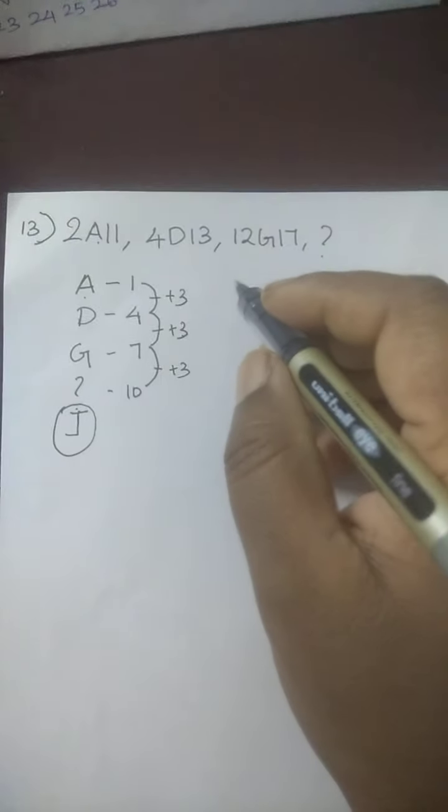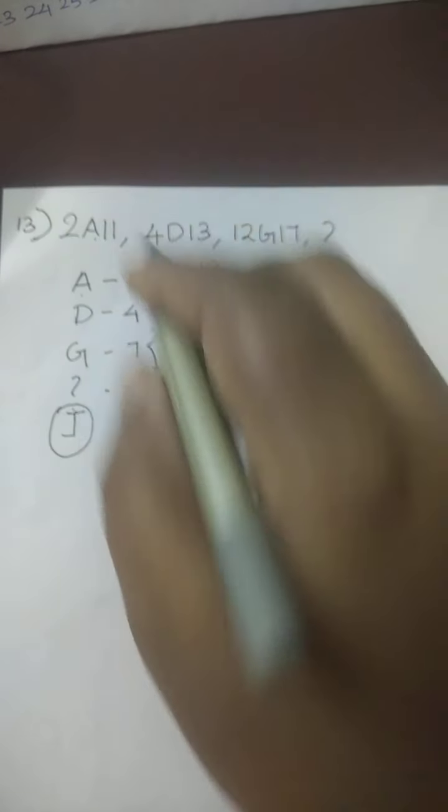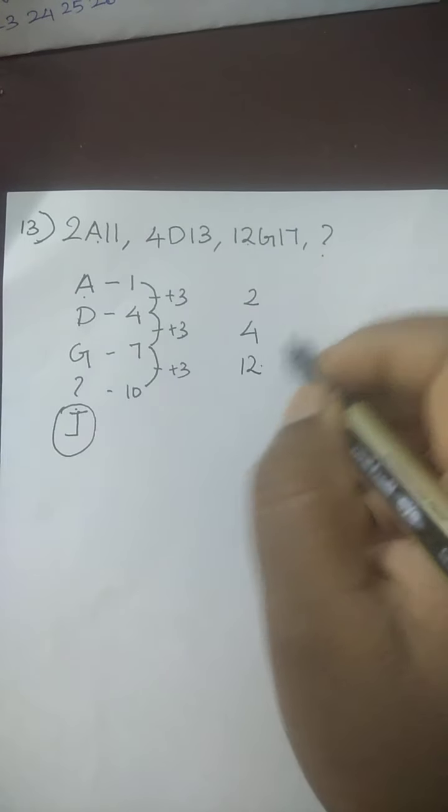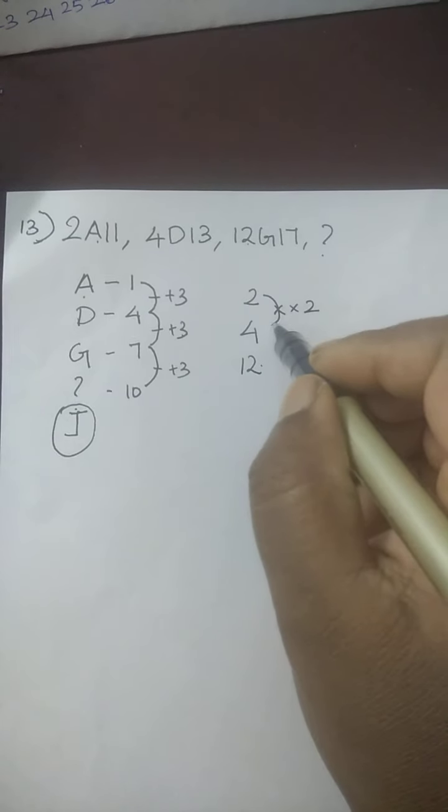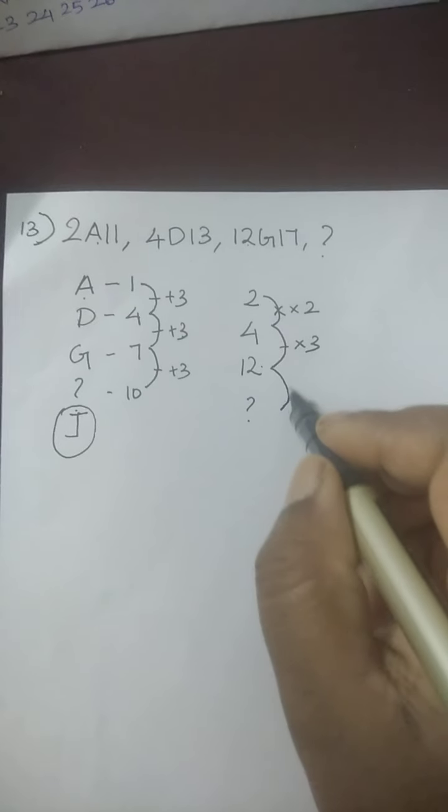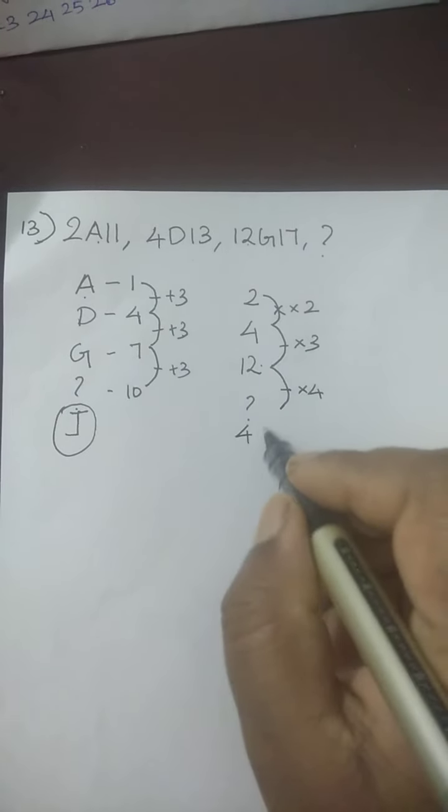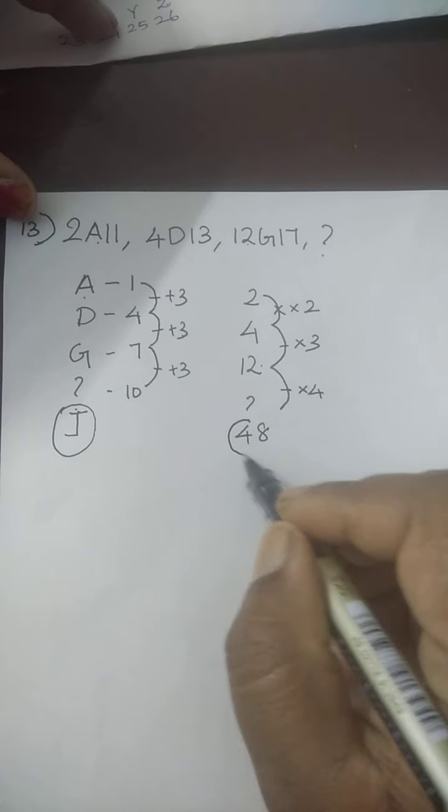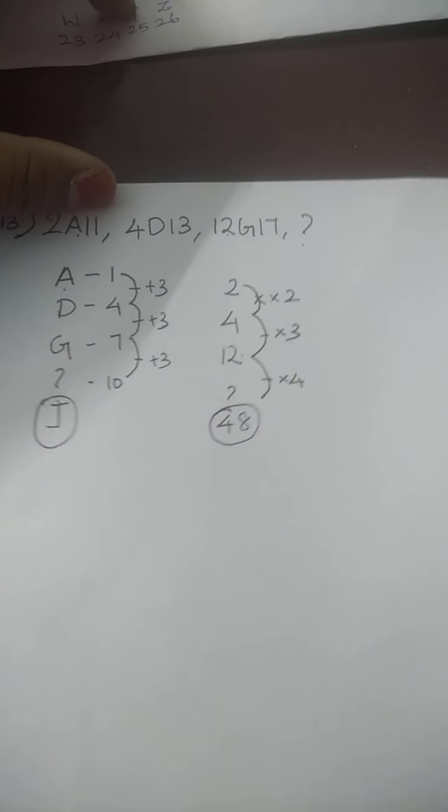Now we are going to find first number series. Here the first element of every number series, I am going to write it separately: 2, 4, 12. See here 2 into 2 gives 4, 4 into 3 gives 12. Then what comes next? 12 into, here 2, 3 in increasing order, so 12 into 4. 12 into 4 gives 48. So we are getting another solution. We get the another solution of number.